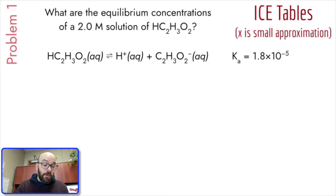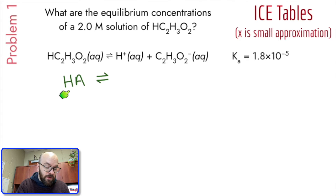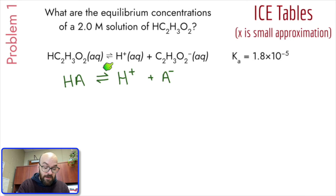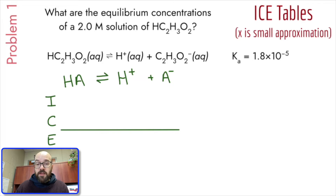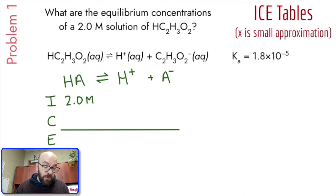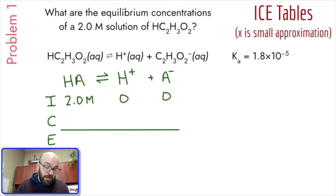On my own paper, I'd replace C₂H₃O₂ with A to save time. So this is acetic acid HA in equilibrium with H⁺ plus the conjugate base A⁻. Now let's set up our ICE table. It's a 2.0 molar solution of acetic acid, so we put that under the acid and assume H⁺ and A⁻ both start at zero. At equilibrium those won't be zero — there will be some amount of each ion — and that's what we're solving for.